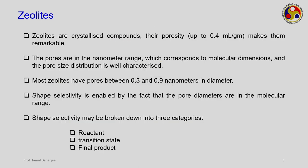Overall, zeolites are crystalline compounds with porosity up to 0.5 mL/gram, making them remarkable catalysts. Their pores are in the nanometer range, corresponding to molecular dimensions, with a well-characterized pore size distribution. Most zeolites have pores between 0.3 to 0.9 nanometers in diameter. Shape selectivity is enabled by the fact that pore diameters are in the molecular range. Even with shape selectivity, if you have three isomers with different molecular sizes, a zeolite can allow only a particular isomer to pass through — this is termed shape selectivity, broken into three categories: reactant-based, transition-state, and product selectivity.